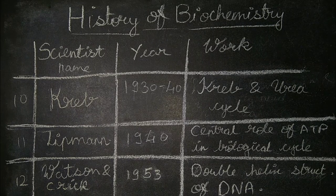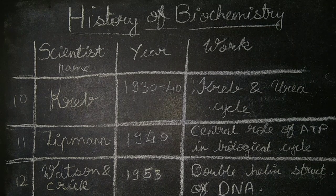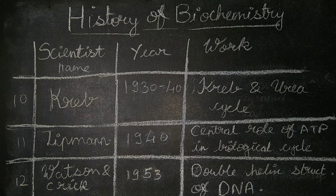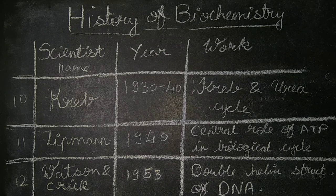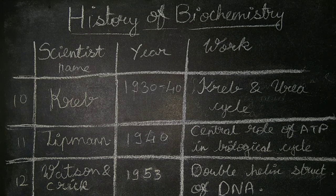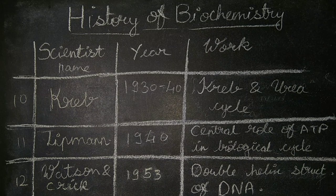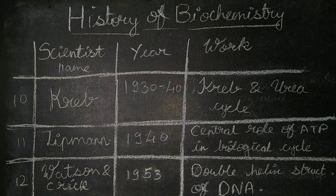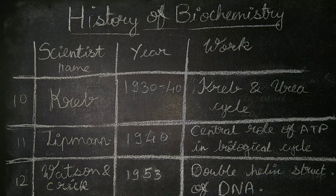The tenth is Krebs in the year 1930 to 1940, who discovered the Krebs cycle and urea cycle. Eleventh is Lipmann in the year 1940, who discovered the central role of ATP in biological systems. Twelfth is Watson and Crick in the year 1953, who discovered the double helix structure of DNA.